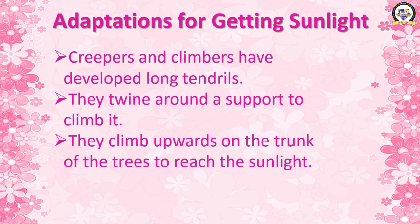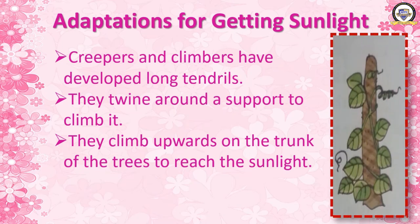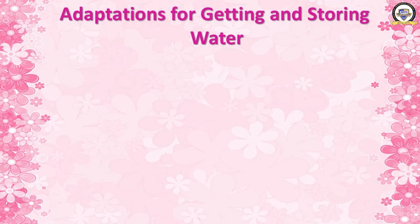See this example — this is a climber. You can see the tendril in it. At the same time, twining is also done. It is a money plant. So all kinds of plants have adaptations for getting sunlight.